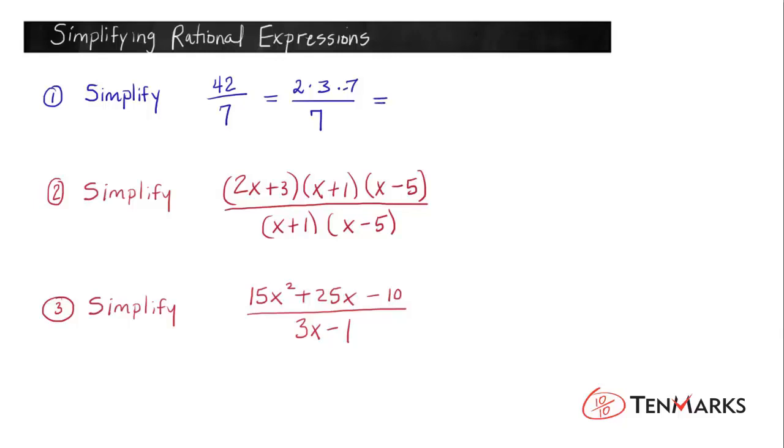So when we divide that factor, 7 divided by 7, we get a 1. And 1 times 2 times 3 is 6. The reason that I'm talking about this first is because I want you to apply this concept to rational expressions. When you're trying to divide polynomials, I want you to think about it in terms of factors. Let's take a look at problem number 2.